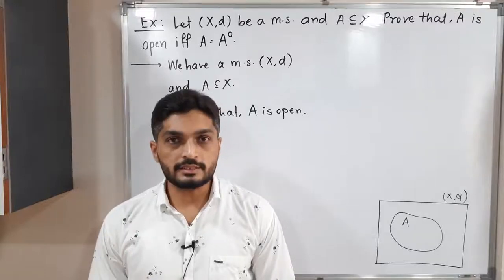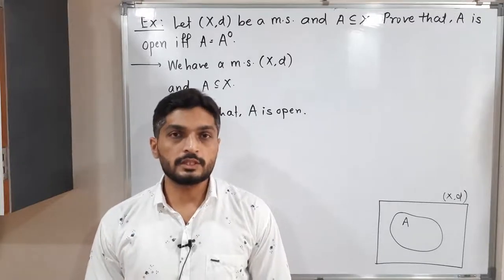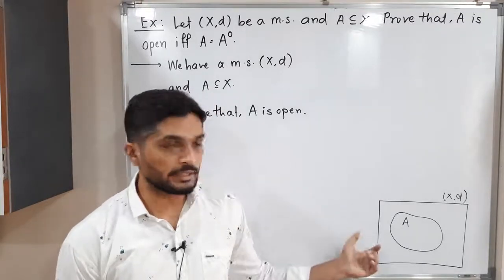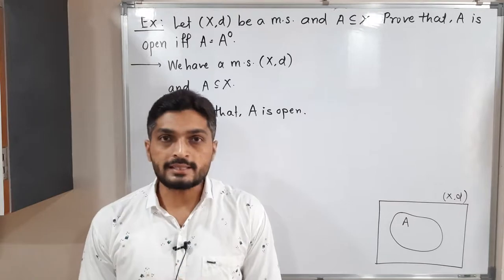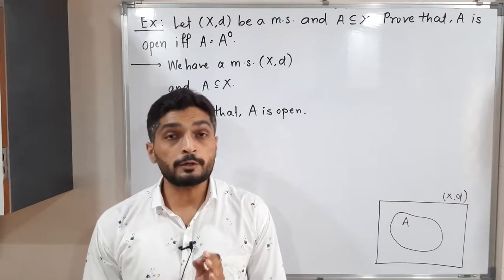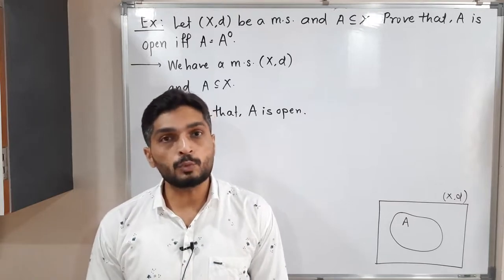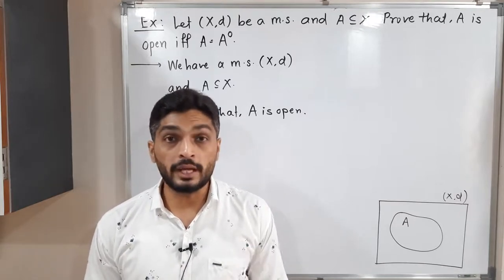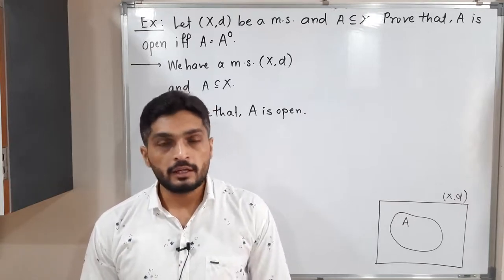Hi everyone, let us discuss this result. So in this result, we have a metric space X with distance d. A is a subset of X. We have to prove that A is open if and only if A is equal to A interior.